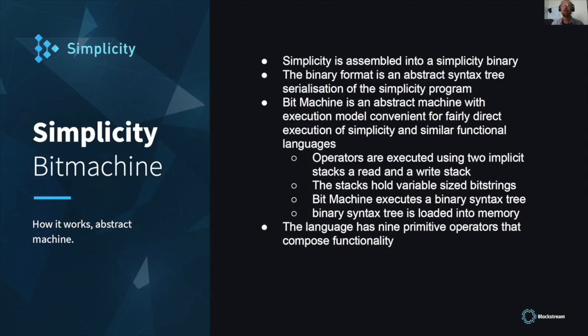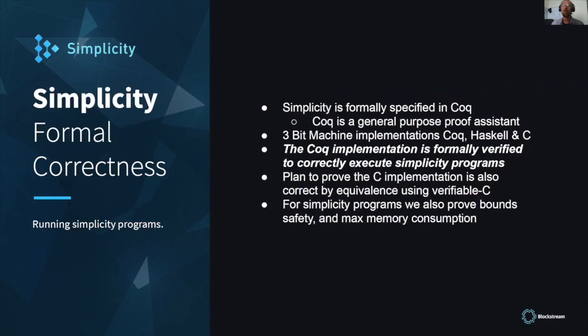The Simplicity program is interpreted when the interpreter — called the bit machine — is invoked. From the Simplicity program, it's assembled into a Simplicity binary, not really compiled because it's a very simple conversion. The bit machine executes that using implicit stacks. Simplicity is formally specified in Coq, which is a language useful for proof assistants. There are three implementations: one in Coq, one in Haskell, and one in C. The Coq implementation is formally verified to correctly execute all Simplicity programs, which is a very strong assurance that the interpreter is correct. That becomes possible because of the extremely simple low-level semantics.